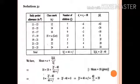Now we multiply fi di. 7 into minus 6 equals minus 42. 6 into minus 4 equals minus 24. 9 into minus 2 equals minus 18. 13 into 0 equals 0. f into 2 equals 2f. 5 into 4 equals 20. 4 into 6 equals 24. Sum of frequency: leaving f, we get 44. So sigma fi equals 44 plus f. fi di sum: leaving 2f, we get minus 40. So sigma fi di equals 2f minus 40.